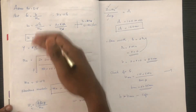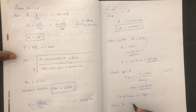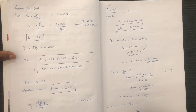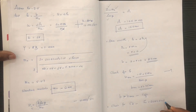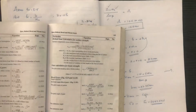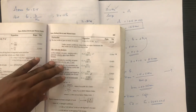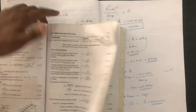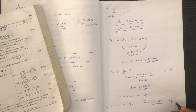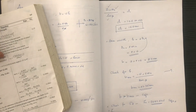Now we check sigma D (induced bending stress). The tangential force Ft is calculated as 2652.62 N. We verify whether the design is safe by checking the dynamic load FD and the wear load FW.